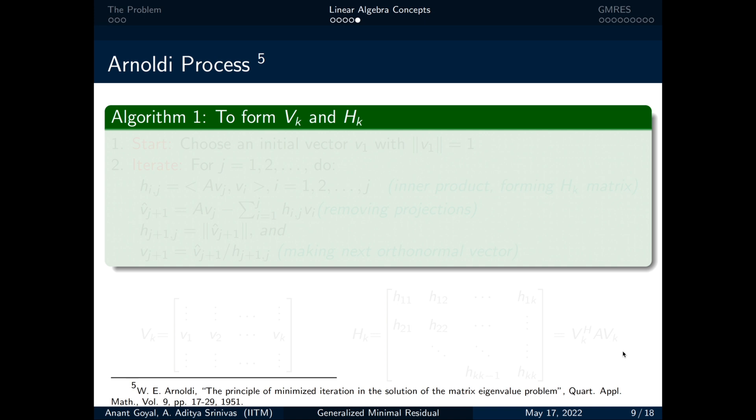Basically, it is an iterative algorithm similar to Gram-Schmidt method which generates the L₂ orthonormal basis for a Krylov subspace. Also, it can be thought of as a similarity transform to reduce a matrix to Hessenberg matrix. Moving on to the algorithm,